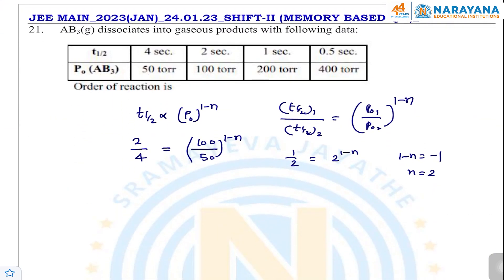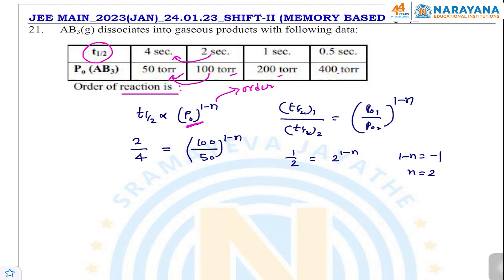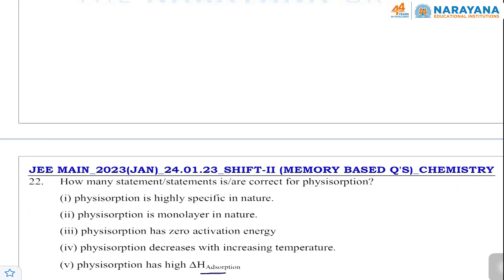The next question is on kinetics. Half-lives are given at different initial pressures; find the order of reaction. For an nth order reaction, half-life is proportional to initial concentration (or pressure) to the power (1−n). Taking the ratio: T½₁/T½₂ = (P₀₁/P₀₂)^(1−n). Using two values — 2/4 = (100/50)^(1−n) — and solving, n = 2. The reaction is second order.